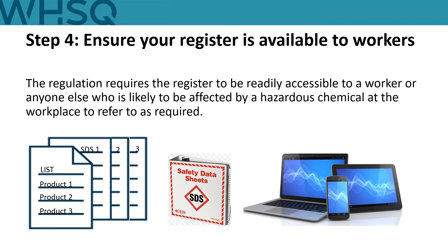Step four: ensure your hazardous chemicals register is available to workers. You must make the register accessible to your workers or anyone else likely to be affected. This can be electronic, web-based or hard copy. You should also consider how this information can be accessed in an emergency situation if there is a power outage. Queensland Fire and Emergency Services attending an incident involving hazardous chemicals will often want access to the SDS and may have to isolate the power in order to safely manage an incident.